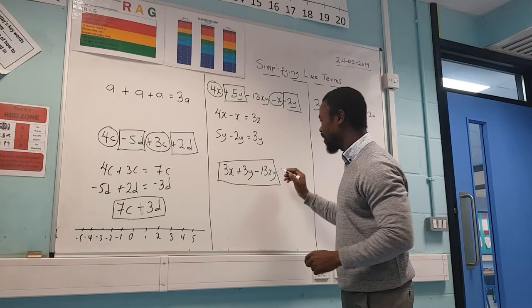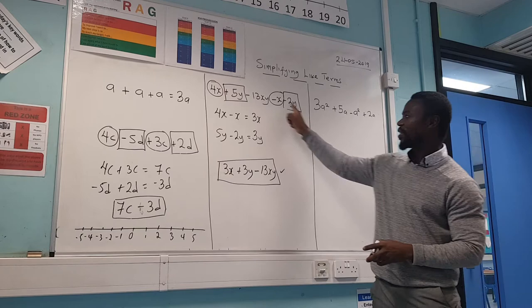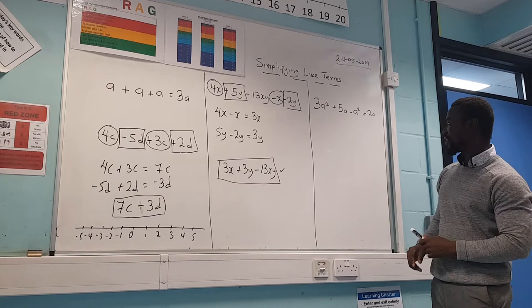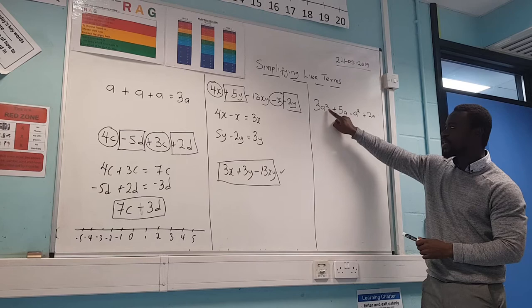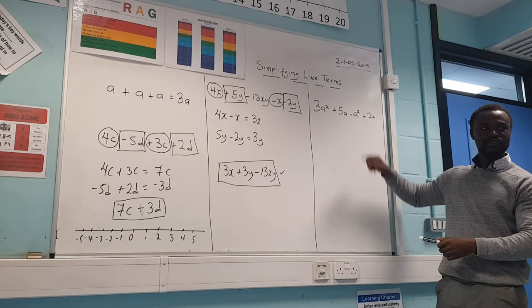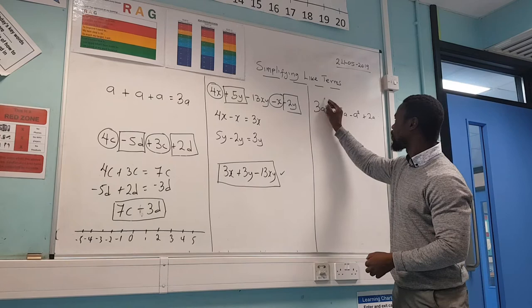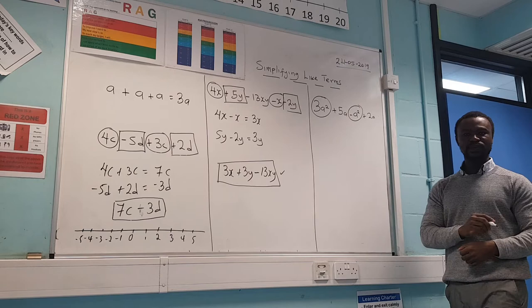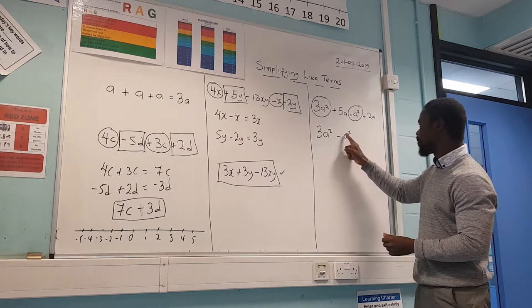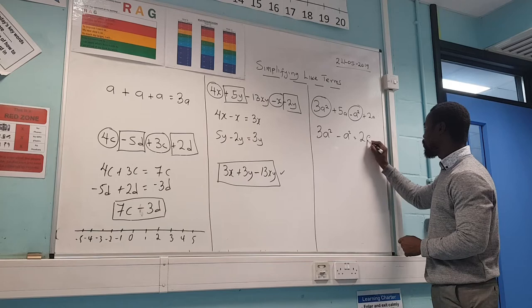So the simplified answer is three X plus three Y minus thirteen XY. Now let's look at another example. This one can be confusing because all the letters are A, A, A, A — but they are not the same. The trick is you have to look at the powers. Some have A with a small two at the top, which we call squared, and some do not. Let's circle all the ones with the small two — the squared ones. We have three A squared minus A squared, and since there's one A squared there, that's three take away one, giving two A squared.